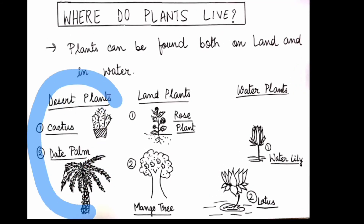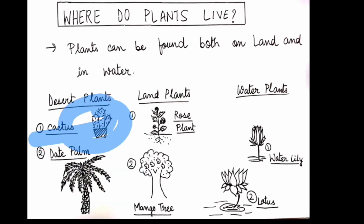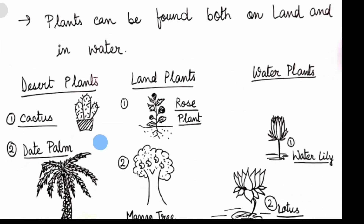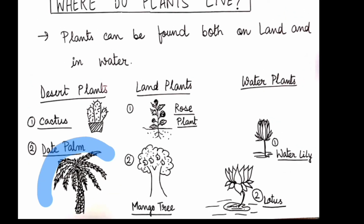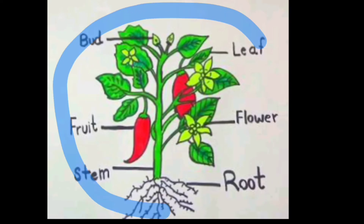Desert plants are the plants found in the desert. Deserts are sandy areas with very hot climates where we find the camel. Two examples of desert plants are the cactus plant, which has many thorns, and the date palm — we often eat date fruit, and this is the plant of that fruit.